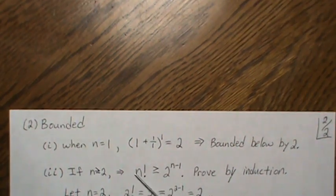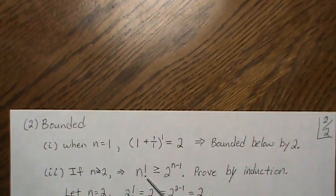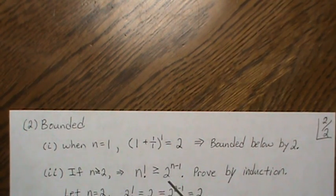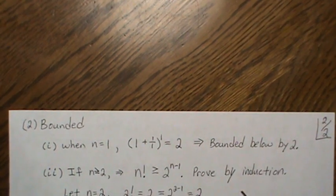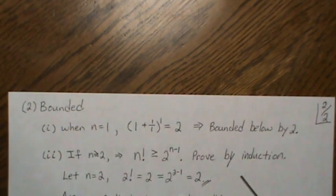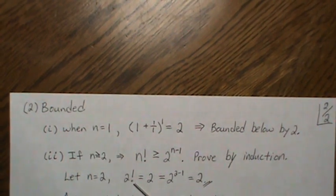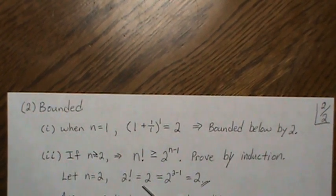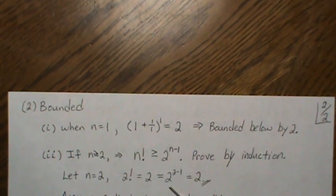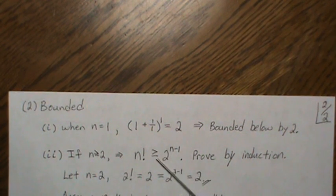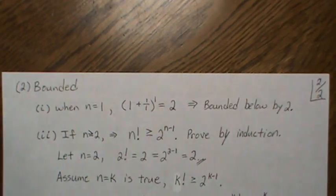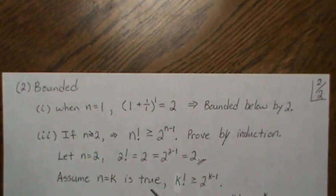Next we want to show that n! ≥ 2^(n-1) for n ≥ 2, and we'll prove this by induction. The base case: when n equals 2, we get 2! = 2, which equals 2^(2-1) = 2, so the statement is true. Now assume it's true for n = k.